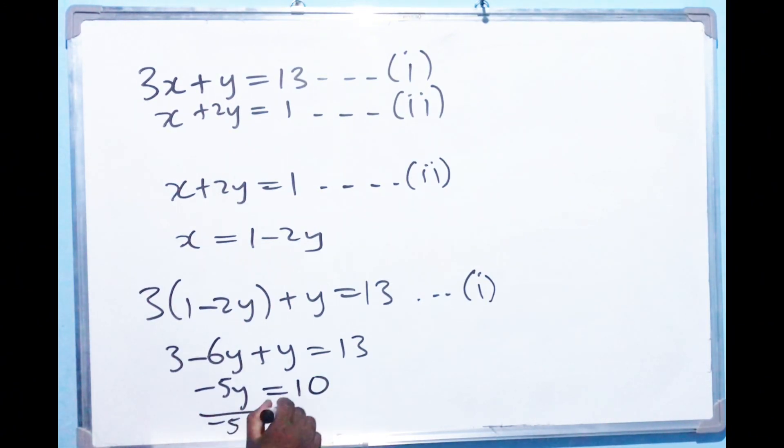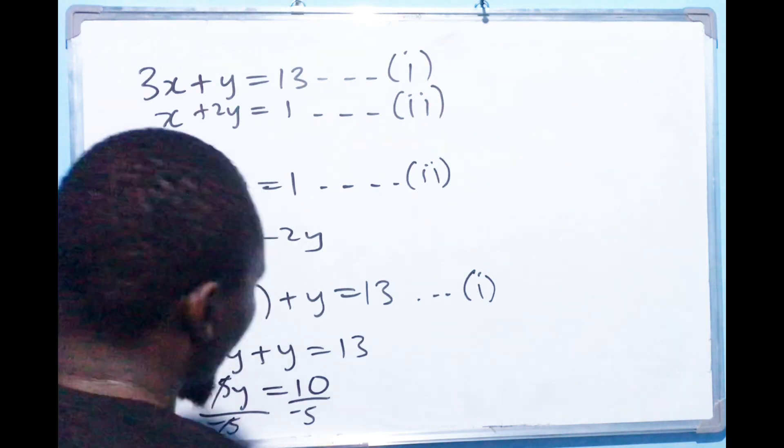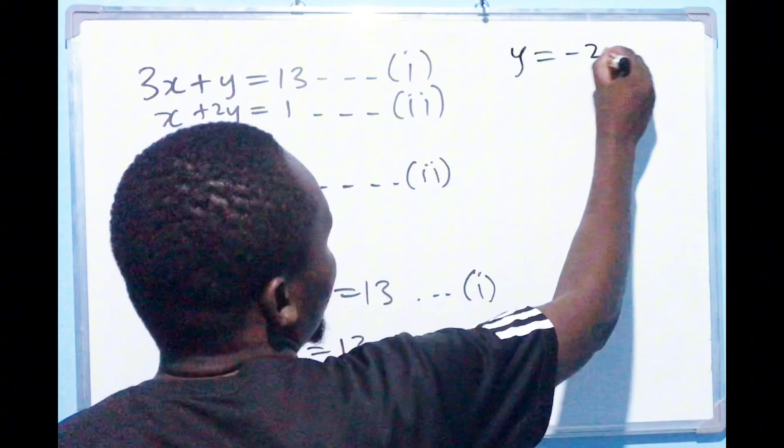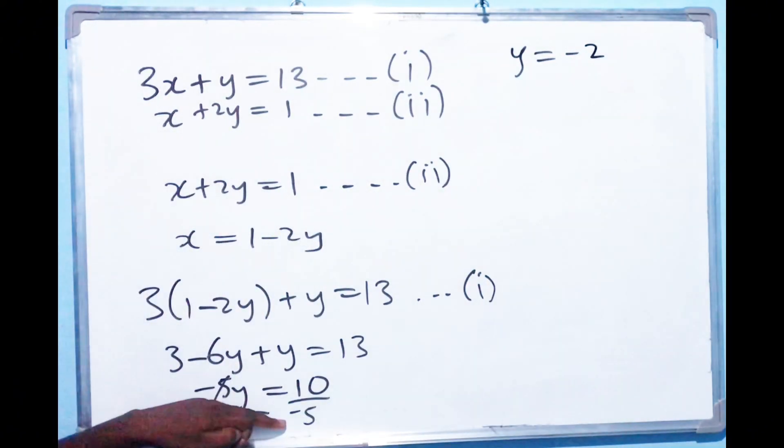So we can divide with negative 5. Negative 5 this will go out. So Y will equal to negative 2, because it's negative 5 into 10. So we get negative 2.